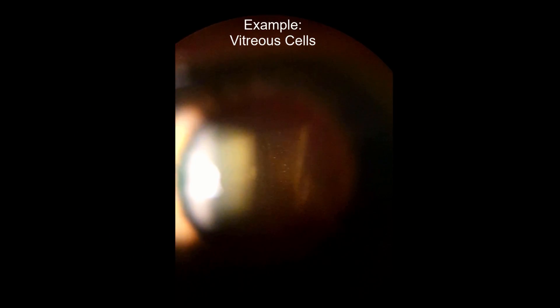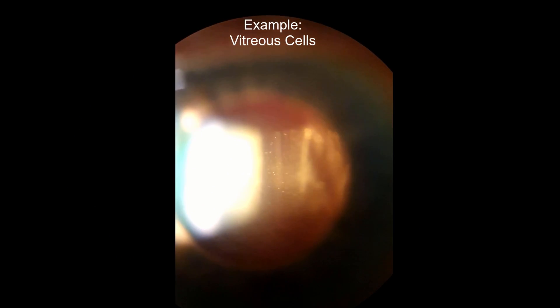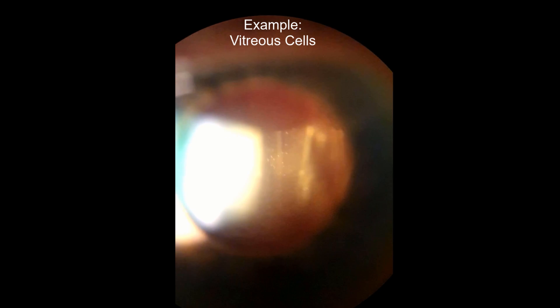You can use this method with slight adjustments to see other structures by dynamically moving the illumination arm angle. If you shorten the height of the beam and use about a 45 degree angle, you can examine the anterior chamber. You can also focus further back into the vitreous to look for cells or tobacco dust.